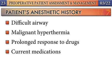The ability to review previous anesthetic records is helpful in detecting the presence of a difficult airway, a history of malignant hyperthermia, and the individual's response to surgical stress and specific anesthetics. The patient should be questioned regarding any previous difficulty with anesthesia. The history should include a complete list of medications, including over-the-counter and herbal products.